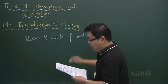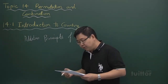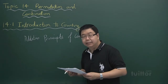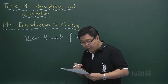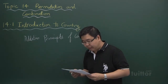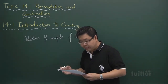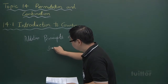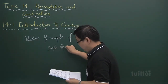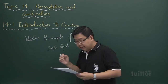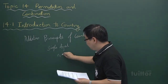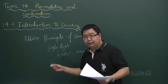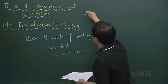What is the addition principal of counting? Based on your materials, it states that if a collection of objects is divided into m distinct non-overlapping parts with n1 objects in the first part, n2 objects in the second part, up to nm objects in the last part, the number of ways of selecting a single object — the keyword here is a single object — is n1 plus n2 up to nm.